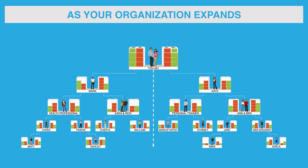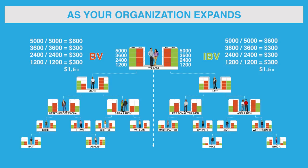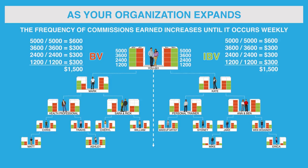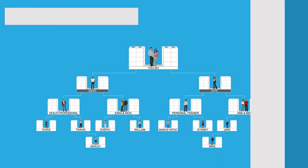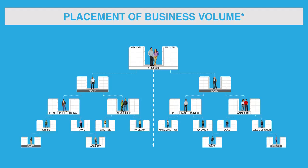Consider this: when you start to accrue BV and IBV the second time, it's easier and faster to earn commissions. As your business organization grows, the frequency of commissions earned increases until it occurs monthly and then weekly. One of the unique features of the compensation plan is the ability to place your new personally sponsored unfranchise owners vertically in depth, supporting the growth of your organization.